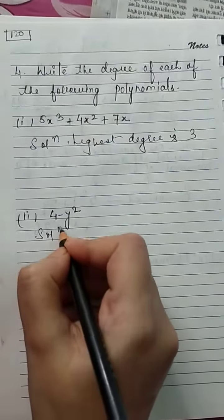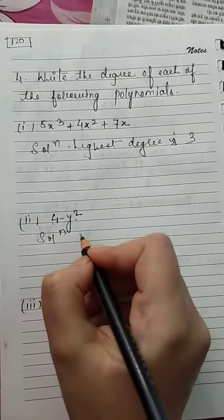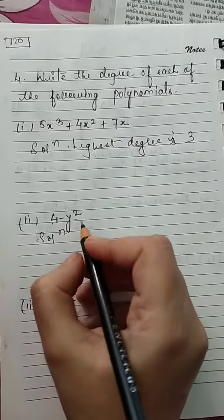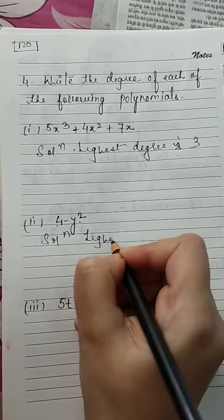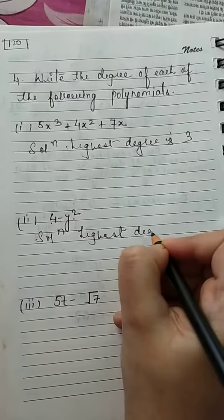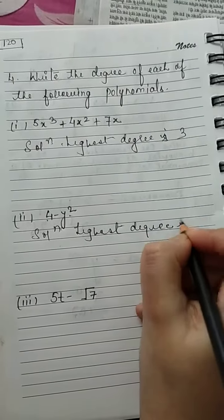In the next polynomial, the highest degree is 2.